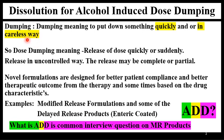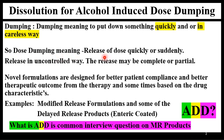The dose is the quantity of the drug which is administered — you may also call it the label claim or single time dose. Dumping means to put down something quickly or in a careless way, meaning it is not in a controlled way. This action is uncontrolled. Dose dumping means the release of a dose quickly or suddenly, in an uncontrolled way. This release may be complete or partial.